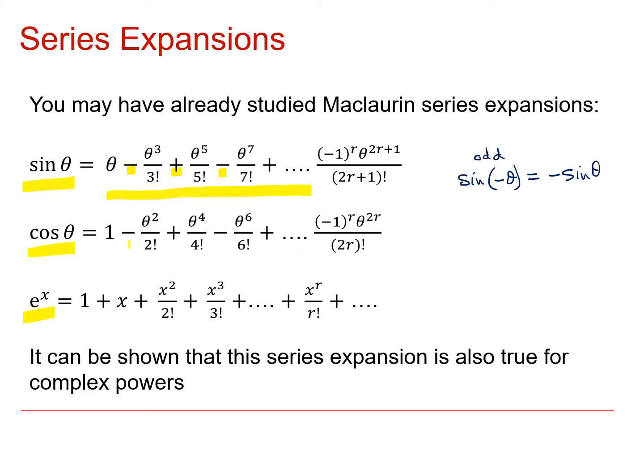If we look at cos starting at 1, cos has even powers of theta again with alternating signs. And we know that cos is an even function. Cos of minus theta is equal to cos theta.